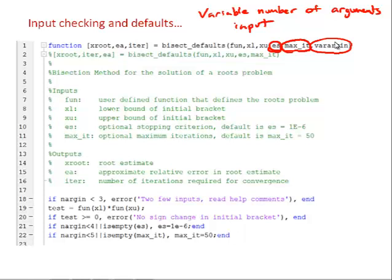Without the VARARGIN, MATLAB will exit the function if there's too few inputs by itself. But with the VARARGIN that allows a variable number of inputs, we have to be explicit about how many inputs, what's the minimum number of inputs the function needs to run. And for this bisection method, that number is three.